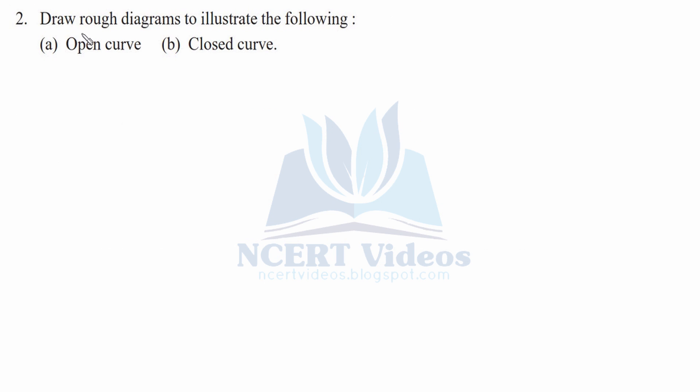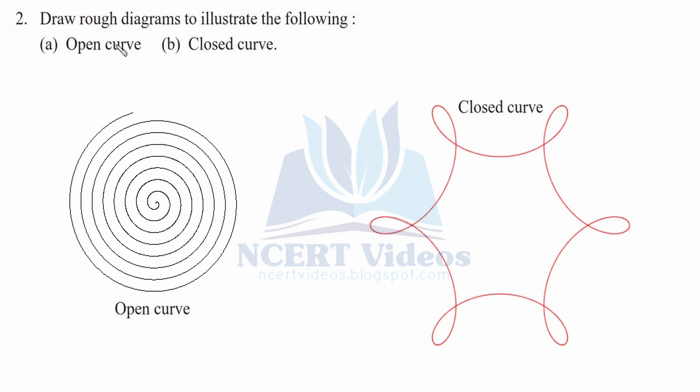Question 2. Draw rough diagrams to illustrate the following. We have to draw diagrams to show open curve or closed curve. First one is spiral. Spiral is always an open curve because it does not cross itself.